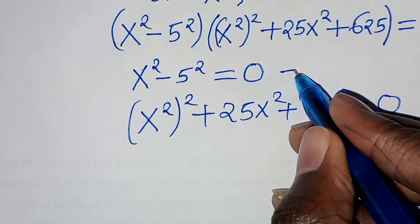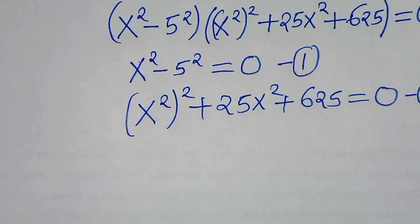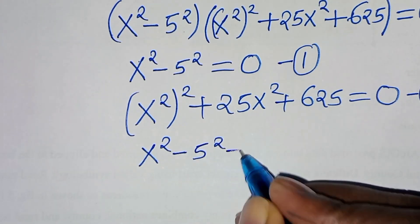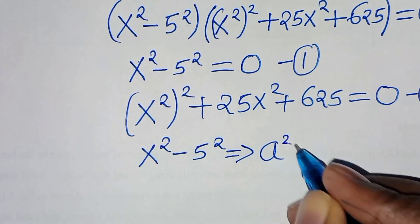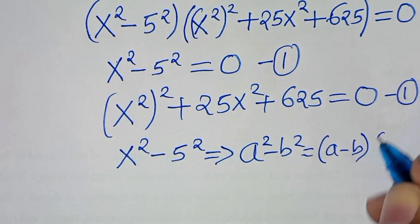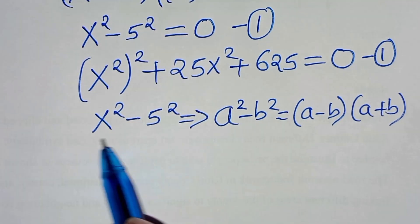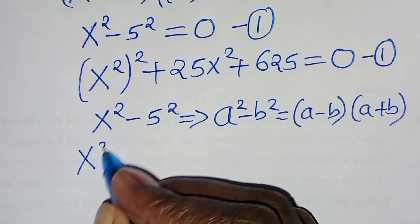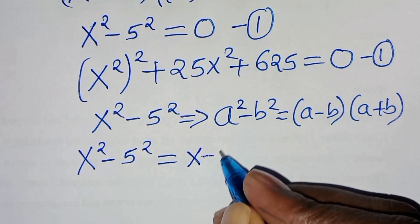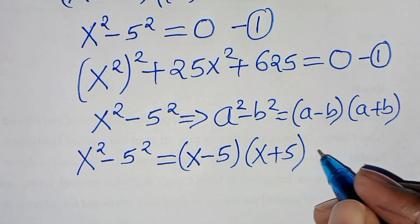So we have two parts here. Let's call the first part equation 1: x squared minus 5 squared equals 0. The second part, equation 2, is x squared to the power 2, plus 25x squared, plus 625, equals 0. Now from equation 1, x squared minus 5 squared is in the form of a squared minus b squared, which factors as (a minus b)(a plus b), giving us (x minus 5)(x plus 5) equals 0.